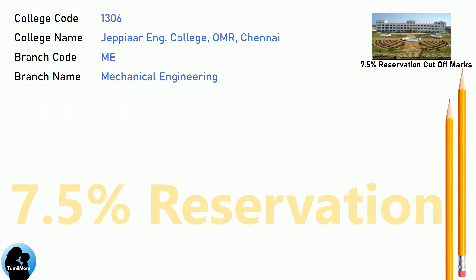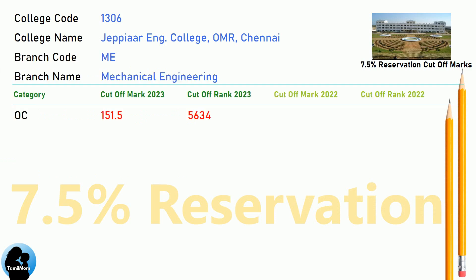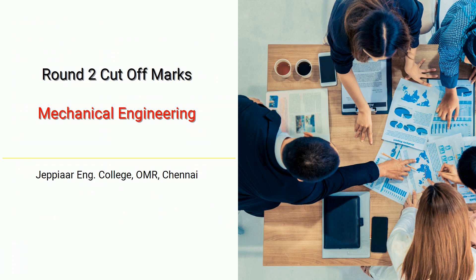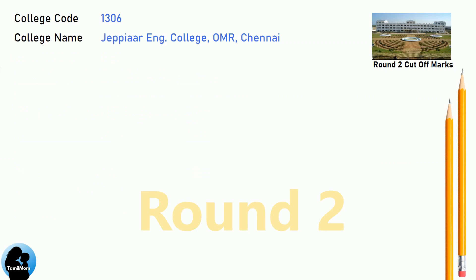DNA 7.5 Reservation Cut-off for JPR Engineering College in Mechanical Engineering. BNEA Round 2 Cut-off for JPR Engineering College in Mechanical Engineering.